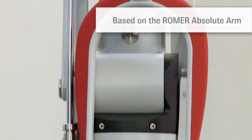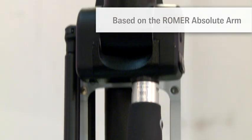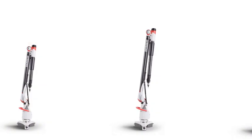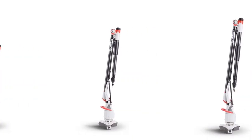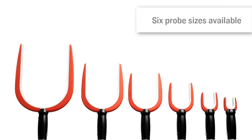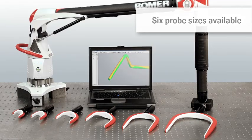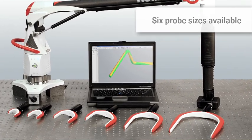It is based on the Rahmer Absolute Arm, a universal portable metrology tool with a measurement volume of up to 4.5 meters. Users can choose from 6 different non-contact probe sizes for tubes with diameters between 4 and 130 millimeters.